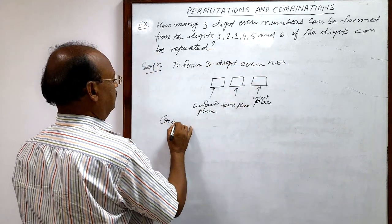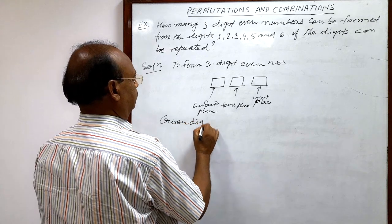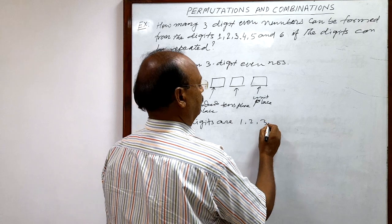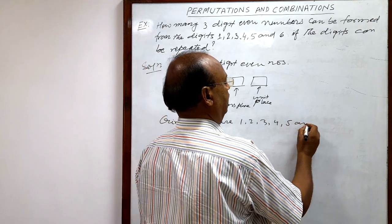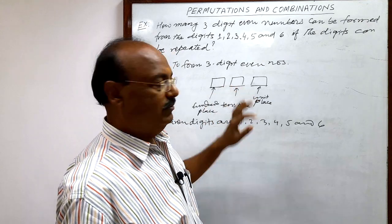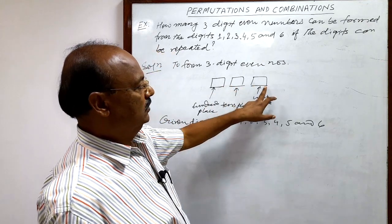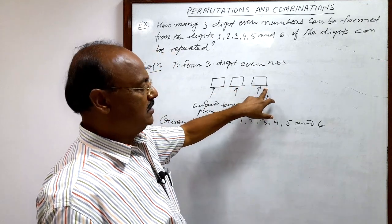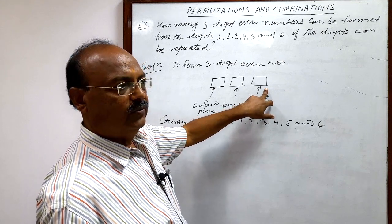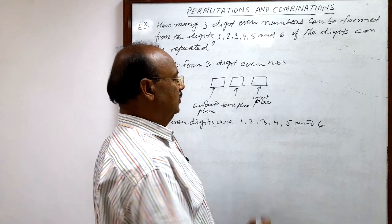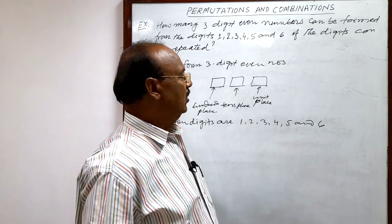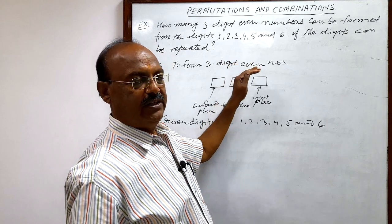Given digits are 1, 2, 3, 4, 5 and 6. So since we have to form three digit even numbers, this digit at units place, this place, this units place can be filled up in how many different ways?